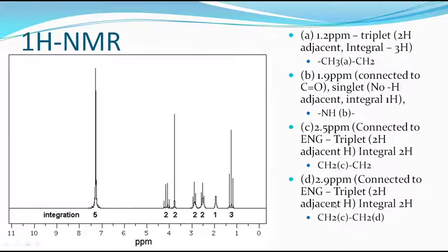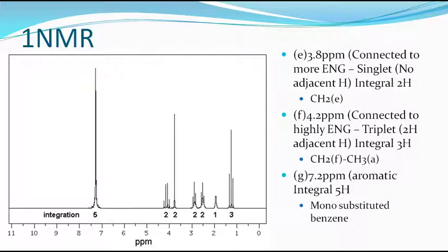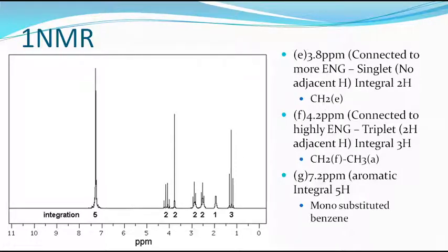The signal at E, around 3.8 PPM with two hydrogens, is connected to a more electronegative group — it must be connected directly to oxygen or something similar. Importantly, it is a singlet, therefore it must be a CH2 group connected on both sides by carbons, nitrogen, or oxygen that bear no hydrogen.